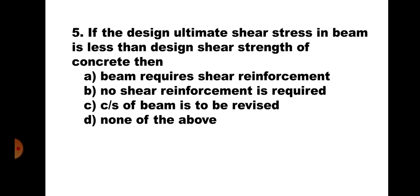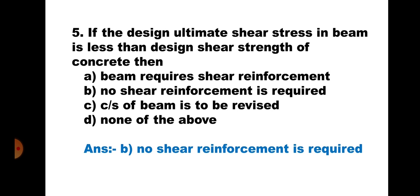Question 5. If the design ultimate shear stress in the beam is less than the design shear strength of concrete, then: A. Beam requires shear reinforcement, B. No shear reinforcement is required, C. Cross section of the beam is to be revised, D. None of the above. Since Tau V is less than Tau C, no shear reinforcement is required. Hence, the correct answer is B.